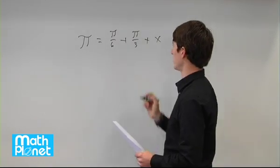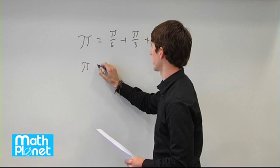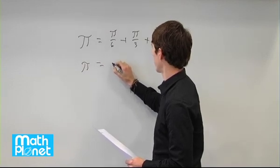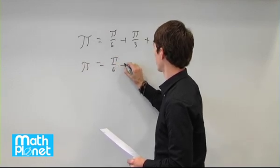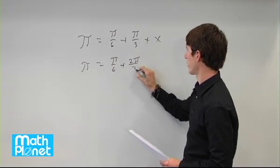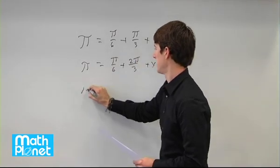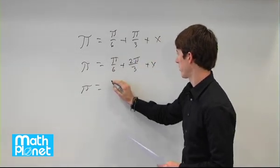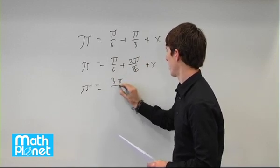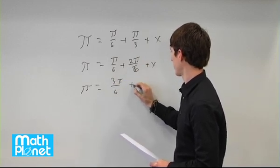So we just need to do similar denominators here and solve for x. So that gives us pi over 6 plus 2 pi over 6 plus x. That is 3 pi, that should be 6, over 6 here plus x.